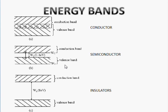In conductors, the conduction band and valence band have almost no energy gap — they are nearly merged at the same level, so the conduction band is almost fully filled. Conduction in conductors is of full strength, conduction in semiconductors is of partial strength, and insulators have no electrons crossing over because the gap is too large. That is why insulators behave as insulators.